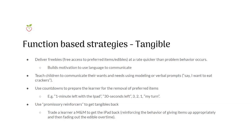You can also build motivation and use language to communicate if your child has issues communicating. Teach them to communicate their wants and needs using modeling or verbal prompts. If your child is tantruming for cookies or crackers, wait out the crying and whining, then prompt them to say 'I want crackers,' and have them say the word or sentence you want. That way you're reinforcing appropriate communication instead of the whining and screaming.